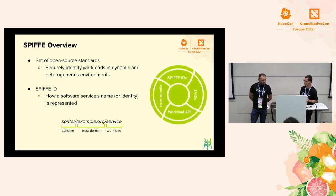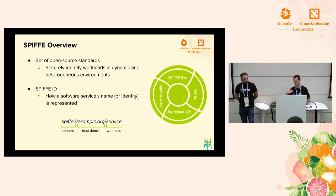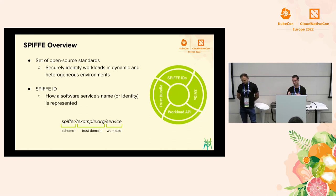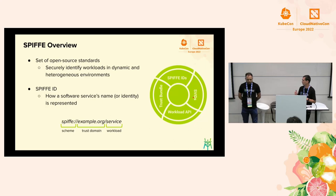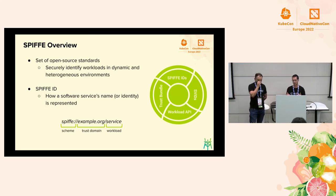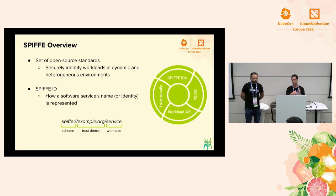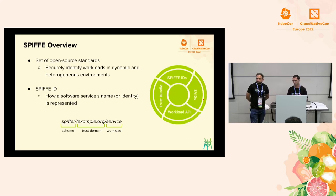SPIFFE is not only about SPIFFE IDs. We also need some kind of document where we can put that ID and be able to verify it. For that, the SPIFFE standards define what we call a SPIFFE Verifiable Identity Document, or SVID. We can think of an SVID like a passport — it contains your identity and there is a way that identity can be verified. In an SVID, you have the SPIFFE ID as the identity and it is cryptographically verifiable.